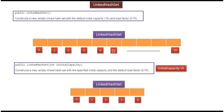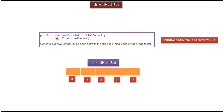The default constructor has initial capacity 16 and load factor 0.75. This is the second LinkedHashSet constructor, which accepts initial capacity. If we specify initial capacity as 5, then this constructor will create a new LinkedHashSet with initial capacity 5 and load factor 0.75.